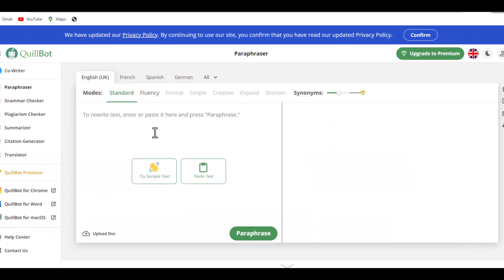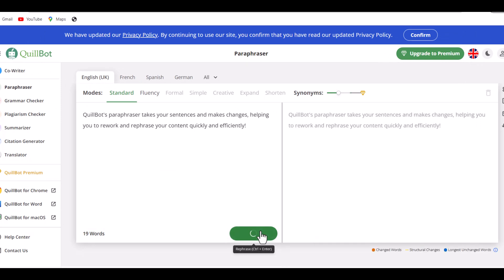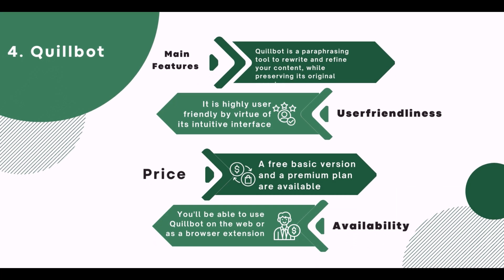4. Quillbot. Major Features: Quillbot is a paraphrasing tool to rewrite and refine your content while preserving its original meaning. User Friendliness: It is highly user-friendly by virtue of its intuitive interface. Price: A free basic version and a premium plan are available. Availability: You'll be able to use Quillbot on the web or as a browser extension.